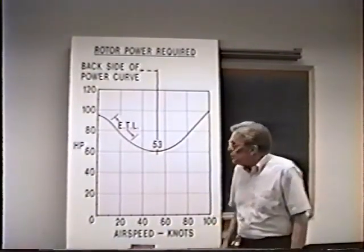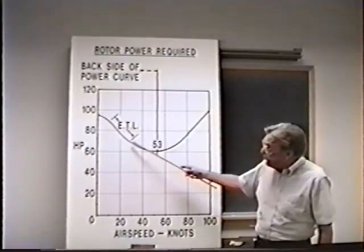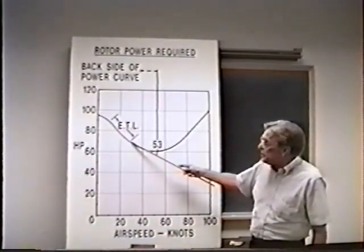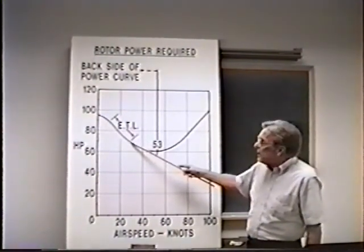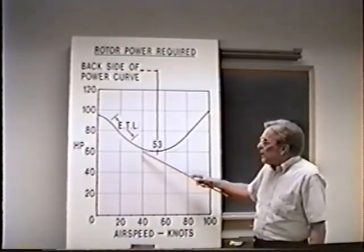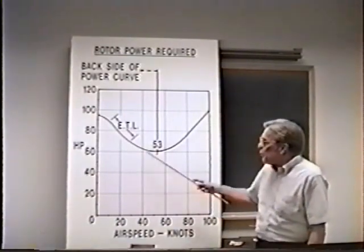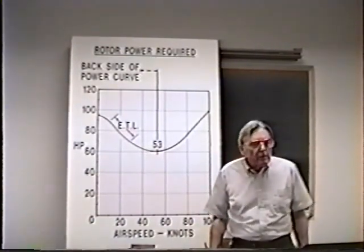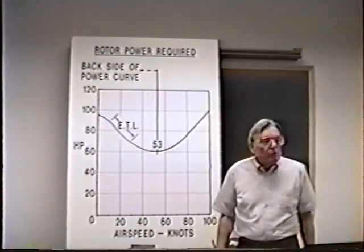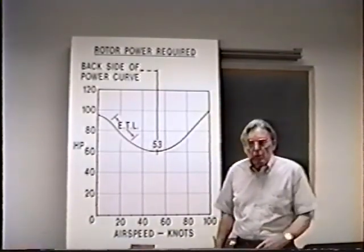Furthermore, it's unstable. If I'm trimmed out at 30 knots, for instance, and it's taking 67 horsepower to maintain 30 knots, again, if I allow that helicopter to momentarily speed up to 40 knots, where it takes only 63 horsepower, it's going to want to speed up even more. And the more it speeds up, the more it's going to want to speed up.